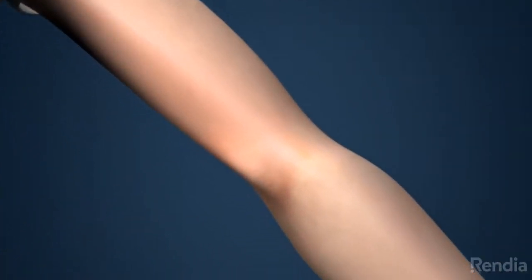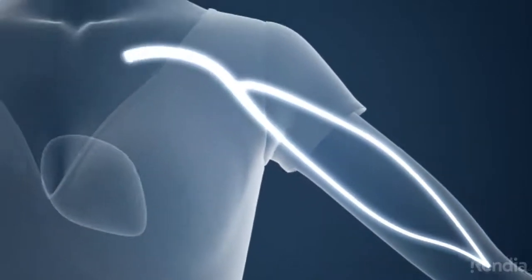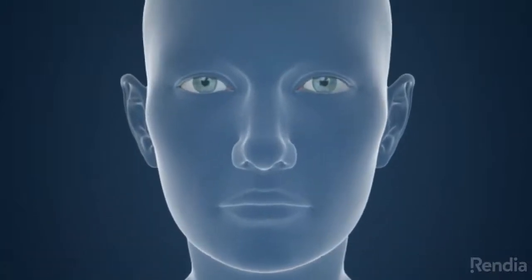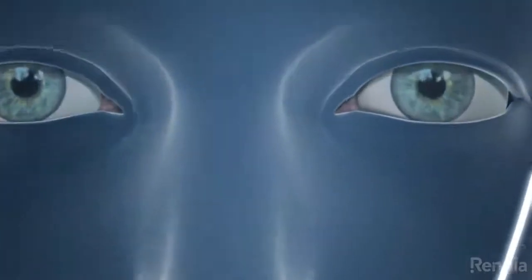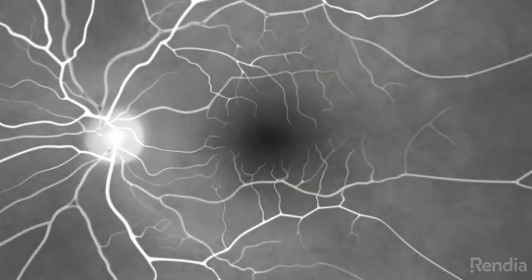Fluorescein angiography begins by injecting a special dye into the arm. Within a few seconds the dye travels through the circulatory system and into the eye through the retinal vessels and into a deeper layer called the choroid.